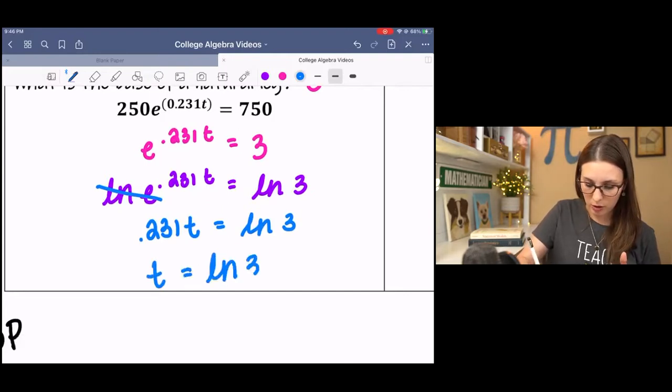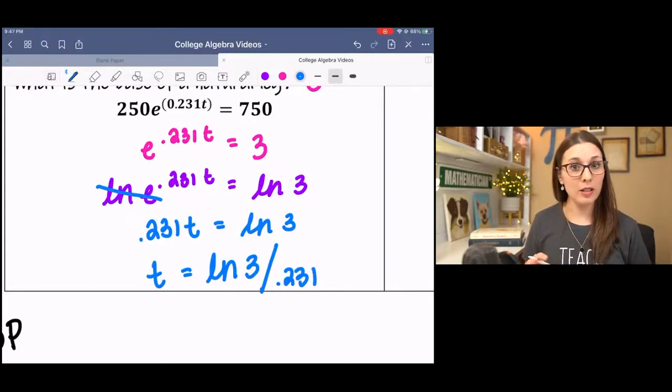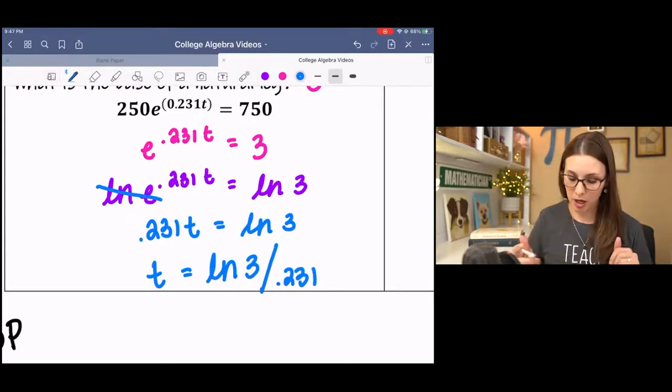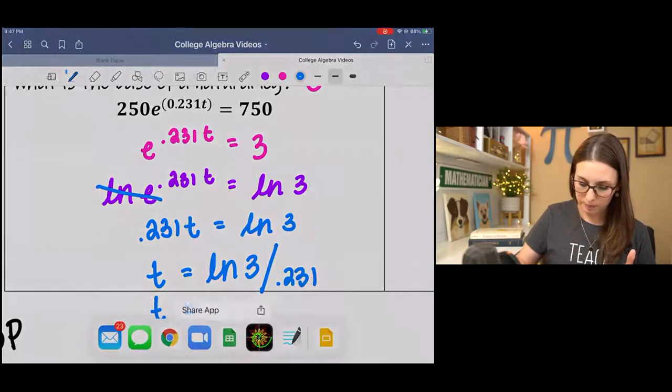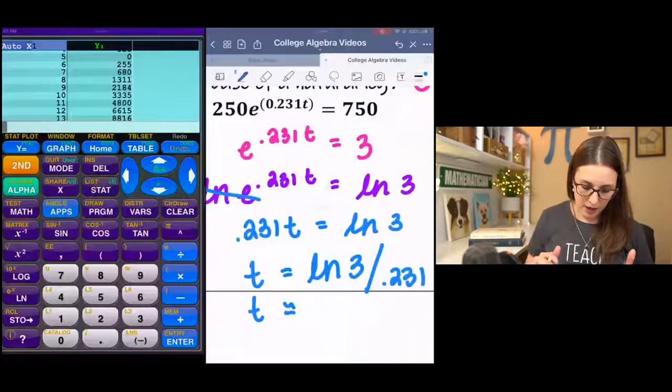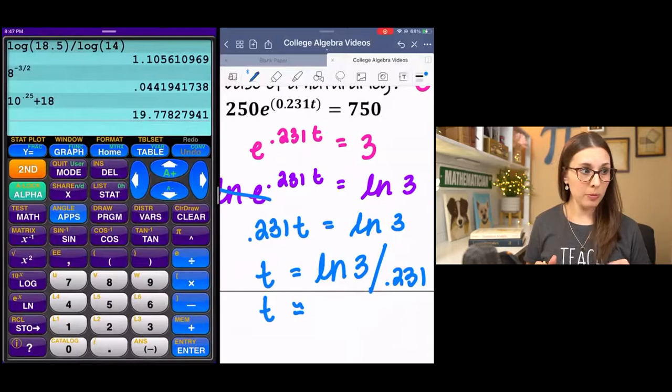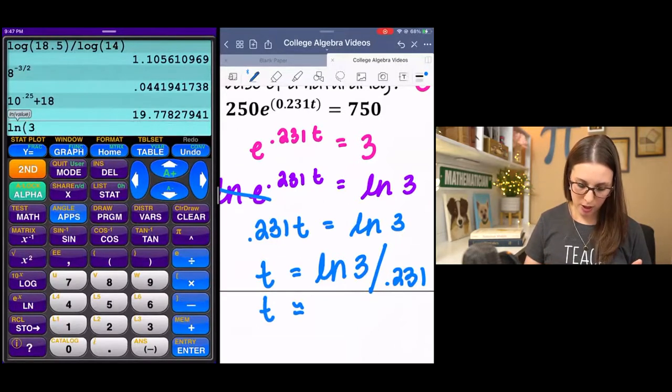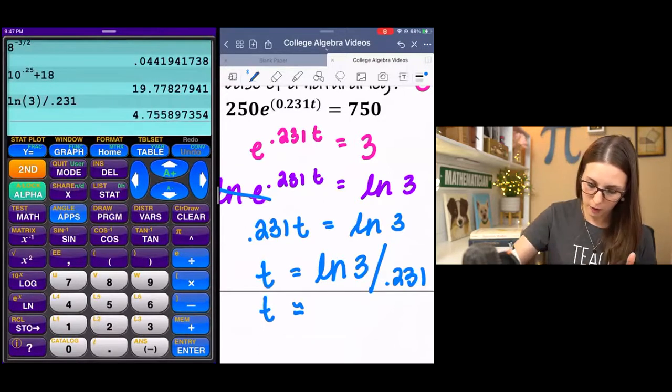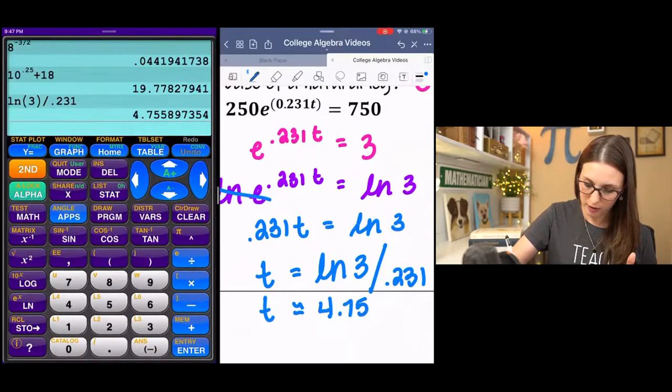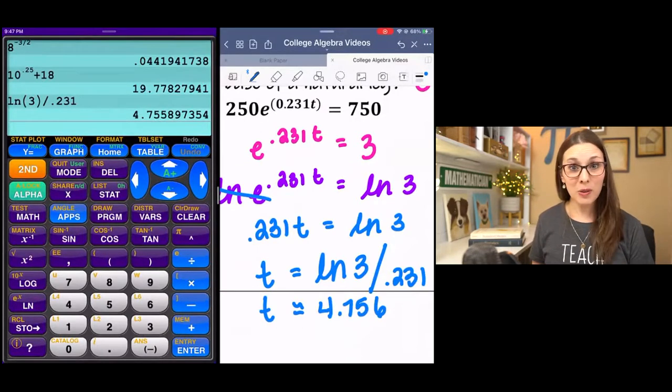If it's asking for an exact solution, we're done. If it's asking for a rounded or approximated solution, then we can type that in. Natural log is down at the bottom under log. So natural log 3, close it, divided by 0.231 is about 4.756. And that's all it wants.